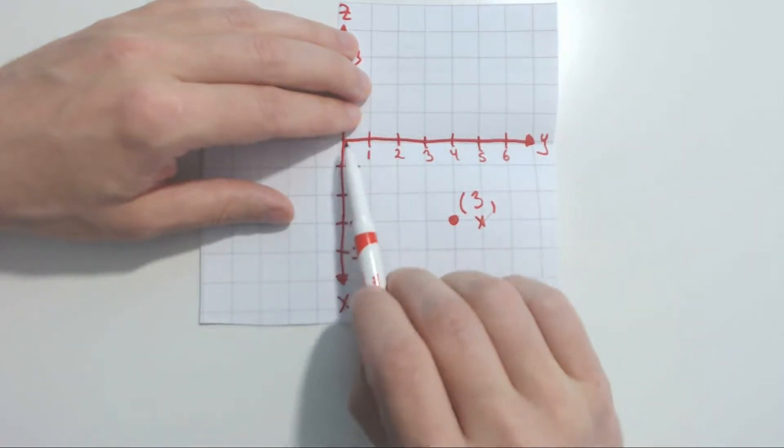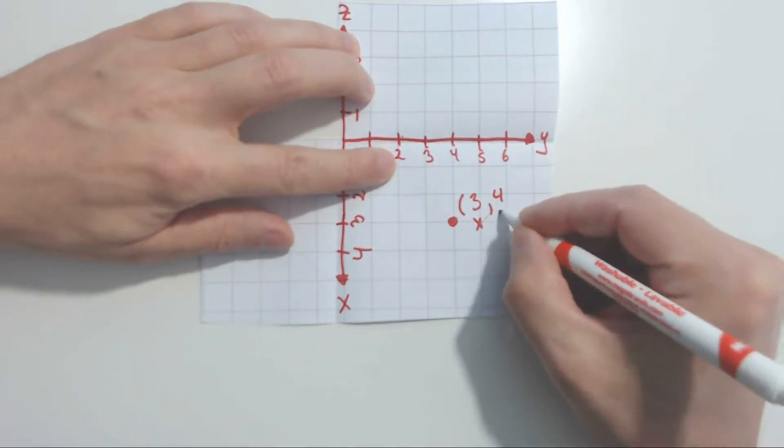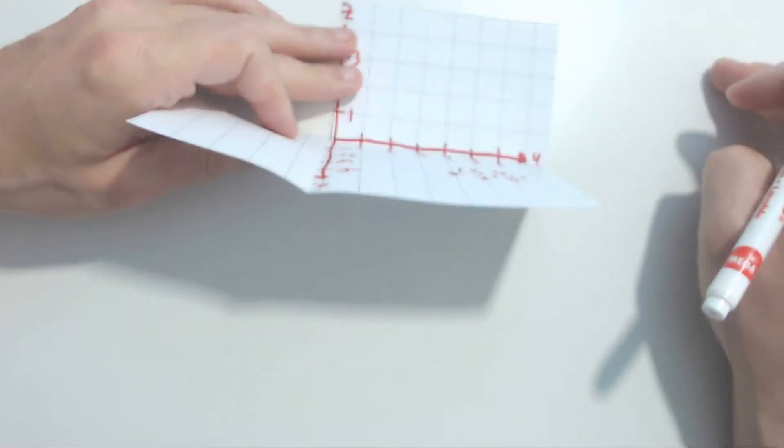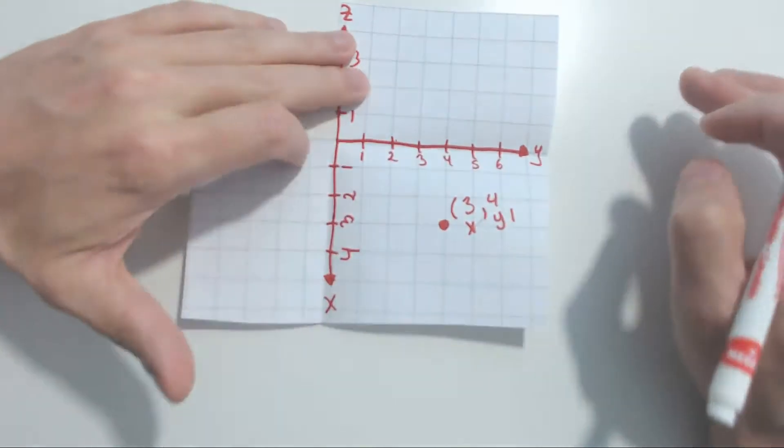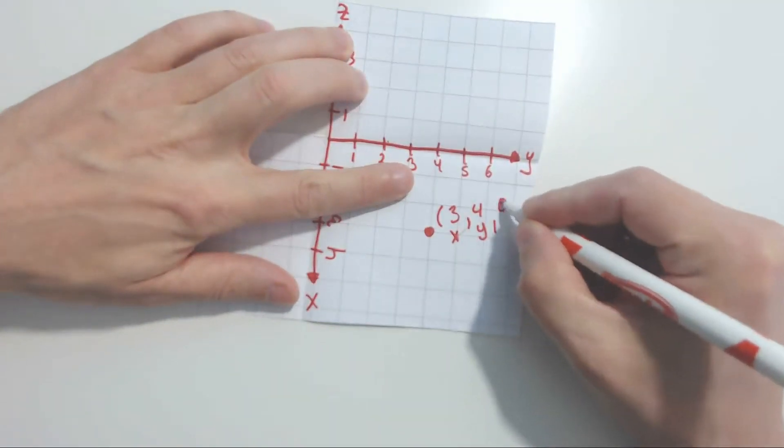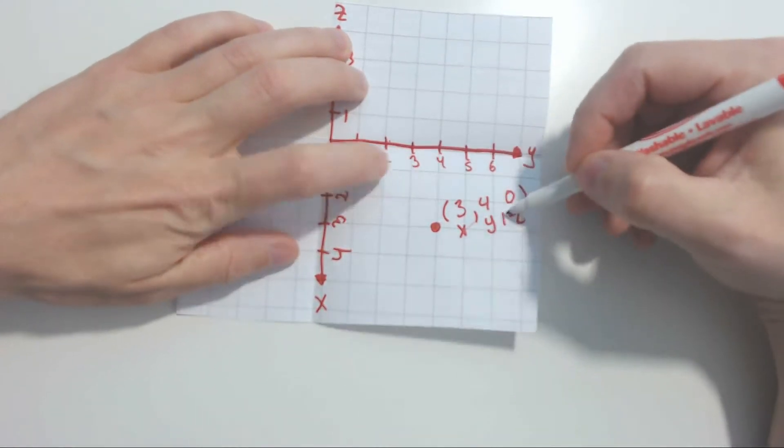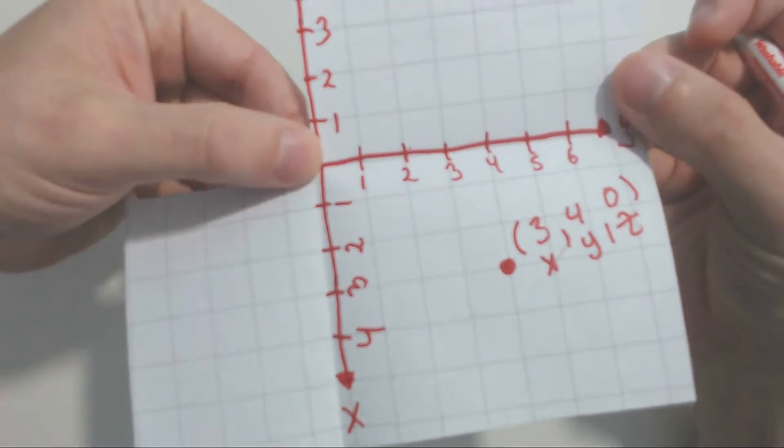For the Y, I count off along the Y axis. 1, 2, 3, 4. So I put 4 for the Y. And again, because I am within this plane, within the XY coordinate plane right here, the Z value is 0. So I'm going to put 0 as the value of Z within that plane. So the point would be labeled (3, 4, 0), the way you see here. Let me bring it up to your view a little better, like that.